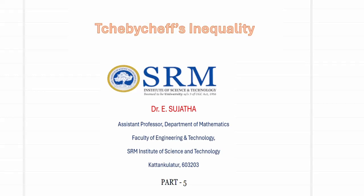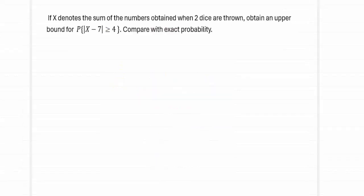Hi friends, welcome to this fifth video on Chebyshev's inequality. The problem for evaluation is: let X denote the sum of the numbers obtained when two dice are thrown. Obtain an upper bound for the probability of |X minus 7| greater than or equal to 4, and compare it with the exact probability. We will obtain the upper bound using Chebyshev's inequality and also evaluate the exact probability, then compare both values.